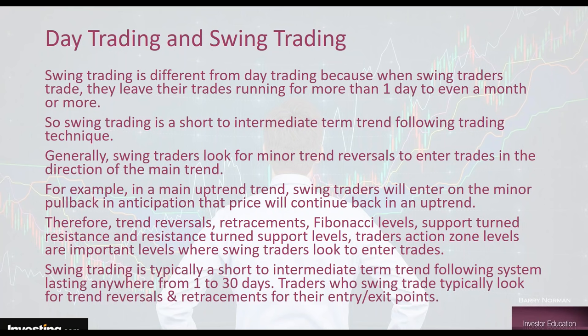Generally, swing traders look for minor trend reversals to enter trades in the direction of the main trend. For example, in a main uptrend, swing traders will enter on the minor pullback in anticipation that the price will continue back to the uptrend — they buy on dips or sell on peaks. They take advantage of eases in the market when buyers in an uptrend just take a breath and let the price ease down a little bit. In a down market, the sellers get exhausted, take a breath, and the price recovers slightly — a swing trader would enter when it peaked up to take advantage of that little movement.